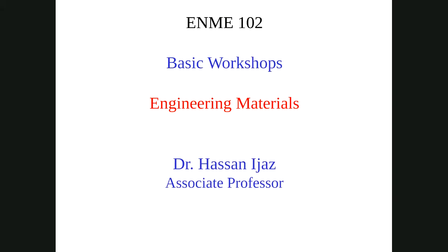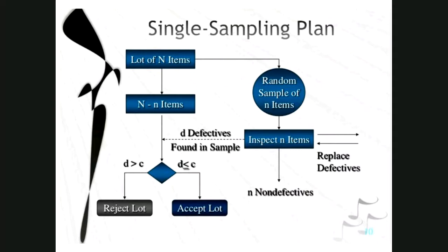To summarize quality control: to maintain and improve quality, we need to know how to measure and control it using statistical control charts and sampling plans. The foundation is accurate and precise measurements using appropriate instruments. This concludes the first topic. Recordings are available for review. Any questions on quality control methods can be asked now before moving to the second part.